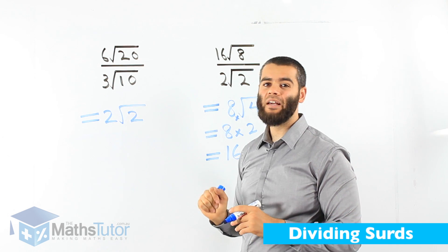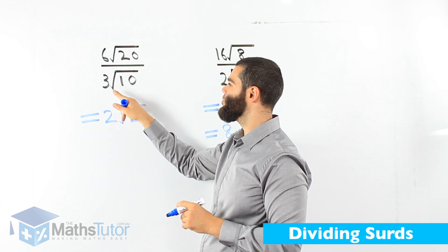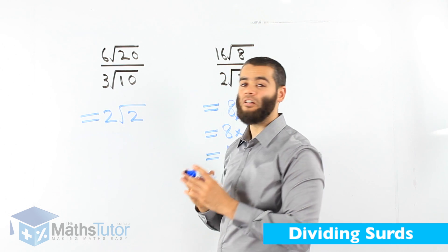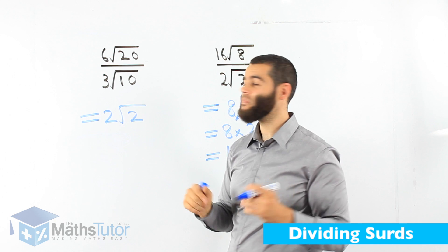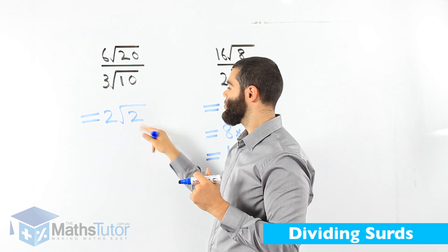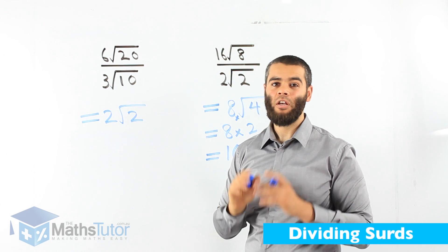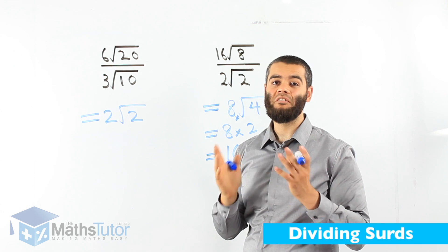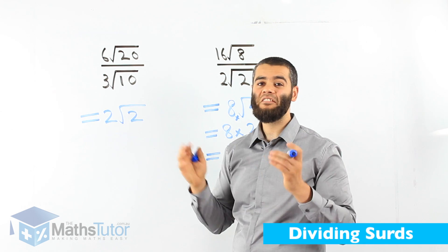Once again, you can put in your calculator 6 root 20 divided by 3 root 10, you're going to get the same answer. It's a long answer, it's going to be a surd as 2 root 2. It's exactly the same. But we write it in surds because it is simpler. If we don't write it in surds, it's going to be a long answer.